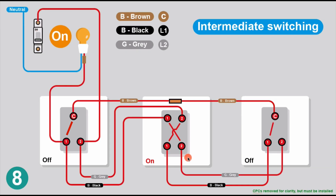This is the eighth and final combination of switching. With three switches, there are eight different positions the light can be in, so you want to check through them all to make sure your lighting is working correctly. The light is going to be on in this configuration. Following the power: it can't get to the common, so it goes through two on the grey, through the intermediate where it's crossed over, through the common, back to the first switch, and onto the light. The light is on. That covers all eight positions for intermediate switching.